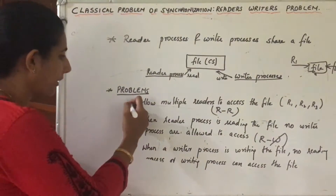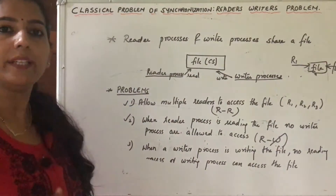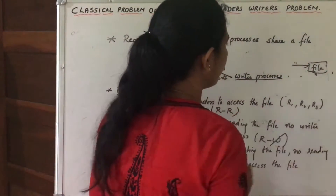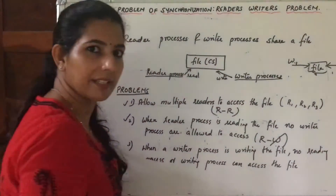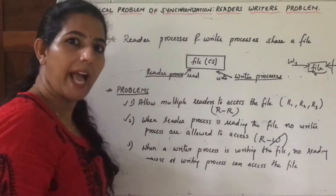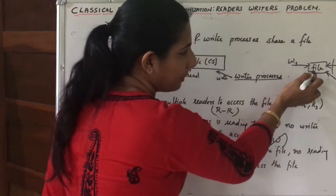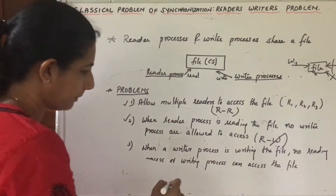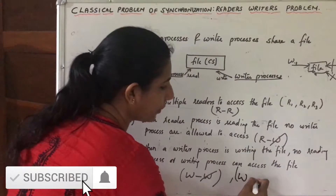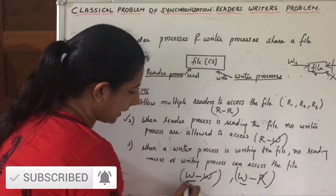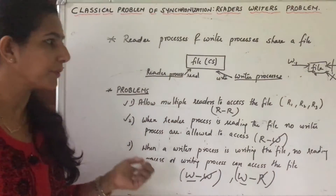The third issue is from the writer's perspective. When a writer process is writing a file, it should block all other writer processes — if W2 asks to write at the same time it should be blocked. It should also block all other reader processes. So when a write is happening, no further writes or reads are allowed by any other process.